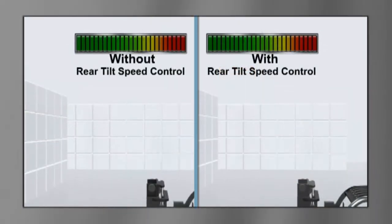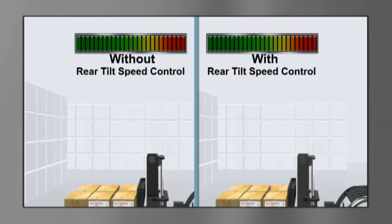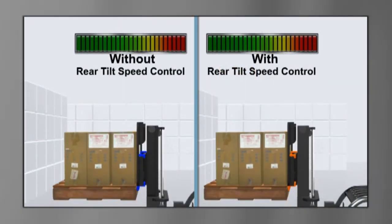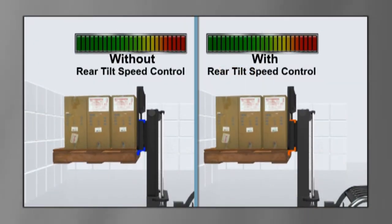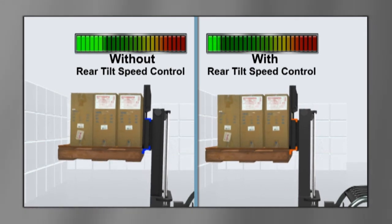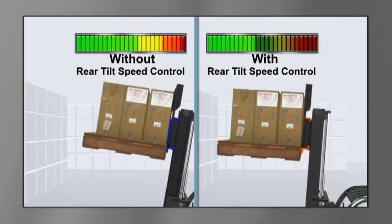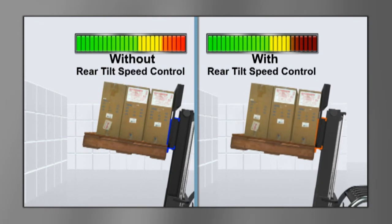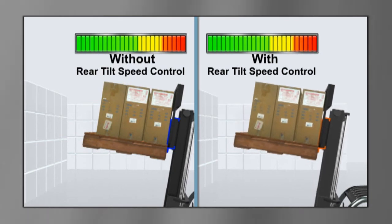Rear tilt speed control utilizes the same load and mast height sensors to reduce the mast's reverse tilt speed to half, decreasing the likelihood of spilling unsecured loads or tipping the lift truck backwards.